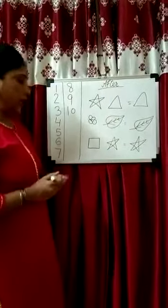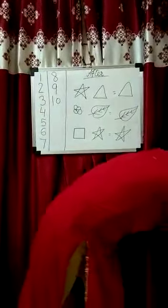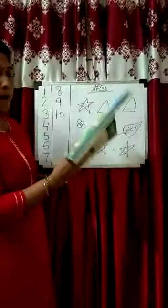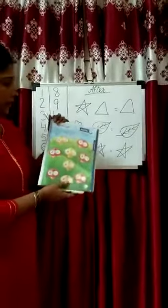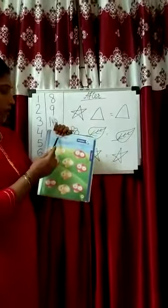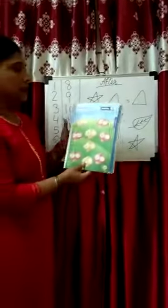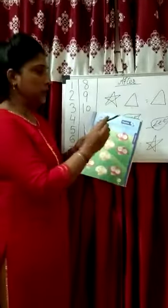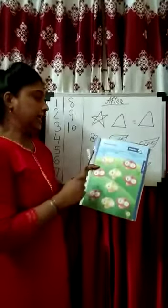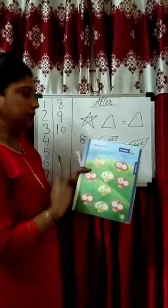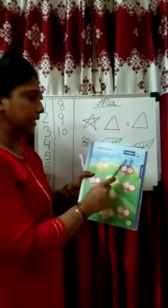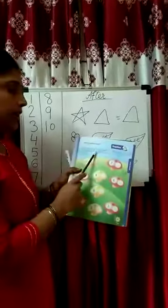Okay kids, now in your book — book number 2, page number 65. See kids, what comes after? First of all, mention the date. Write the numbers that come after the given numbers. One has been done for you. These are numbers related to after.